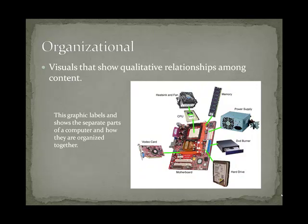Organizational graphics show qualitative relationships among content. This example also uses a computer. Notice the difference from the representational example. Some graphics can act as more than one type of graphic. In this case, the example is an organizational graphic, but it could also be used as a representational graphic as well.